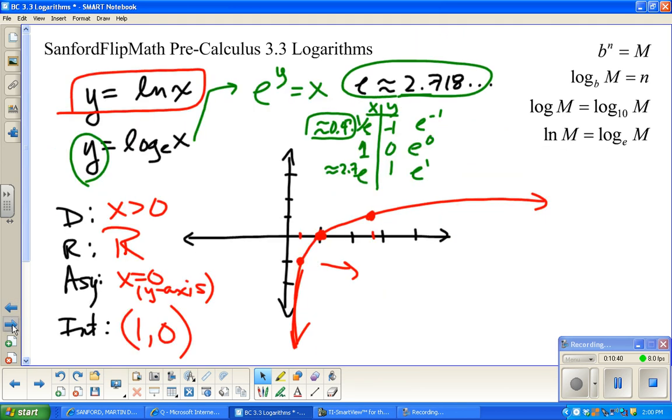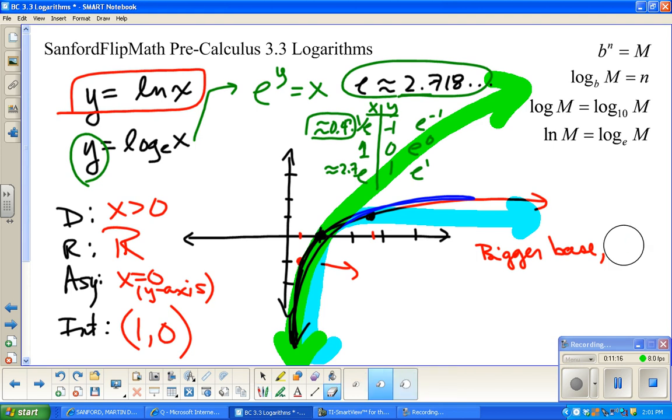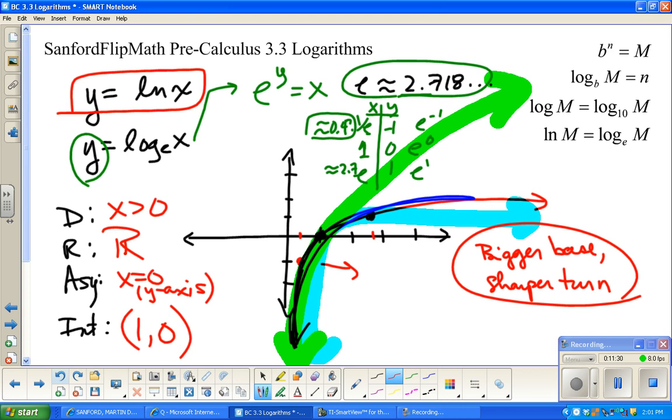Understand that the curvature of this thing changes a little bit. On a different base, maybe it's more like that. On yet another base, maybe it's more like this. It just depends. The higher the base, the sharper the corner. Bigger base, sharper turn, sharper corner.